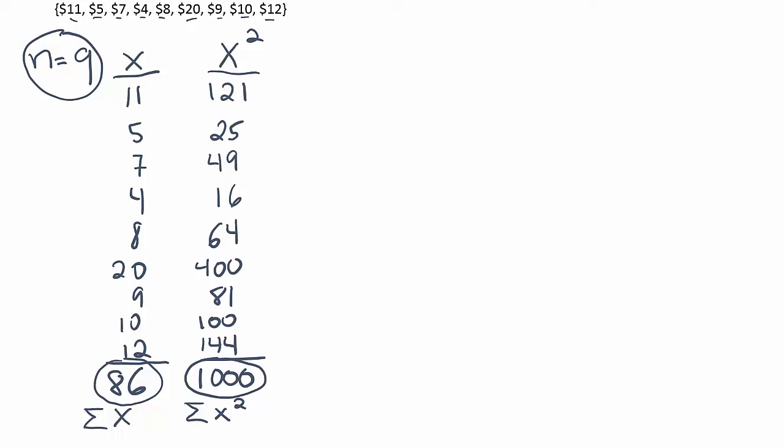Now, once we've named both of those columns, the next step is to plug that information into our formula for the variance. So the variance is s squared is equal to n times the summation of x squared minus parentheses the summation of x squared divided by n times n minus 1.